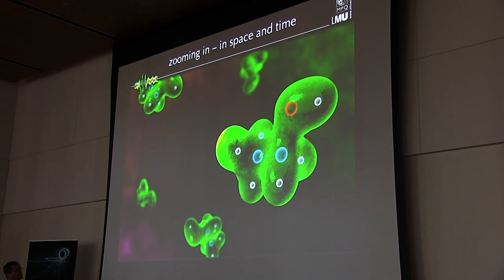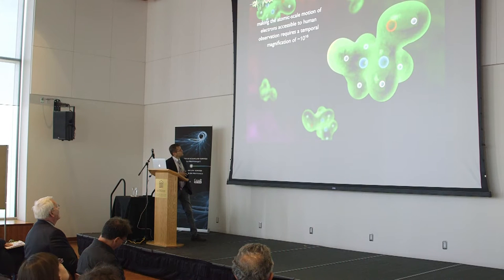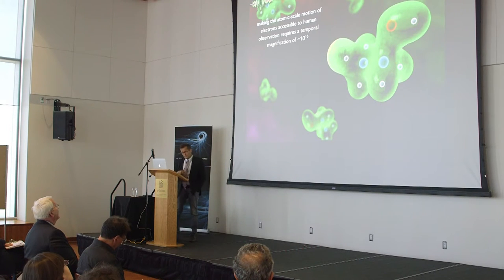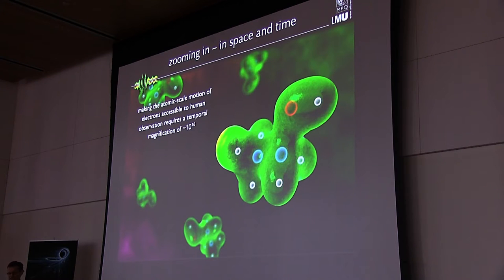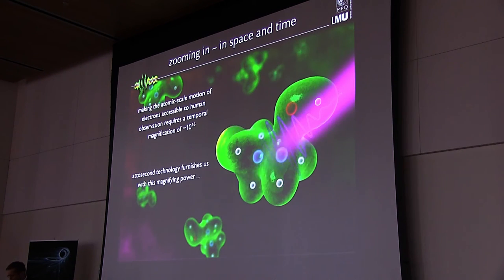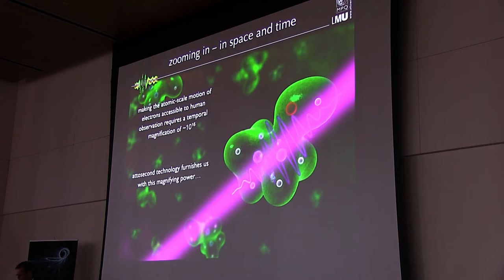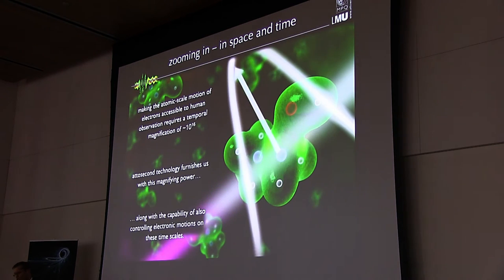Correspondingly, if you wish to make these atomic scale electron motions accessible to human observation, we need to create a device, we need to create tools that are capable of providing us with a temporal magnification of about 10 to the 16, which is about the square of the magnification we need to make atomic structures perceivable in space. Attosecond technology furnishes us with this tremendous magnifying power, as well as more and more also with the capability of controlling these motions on their natural time scales.